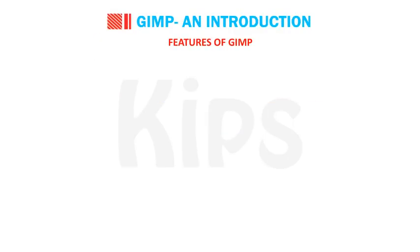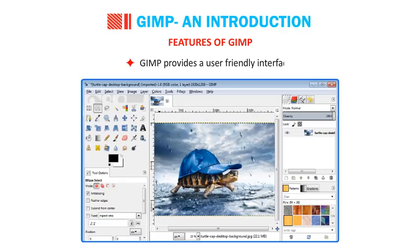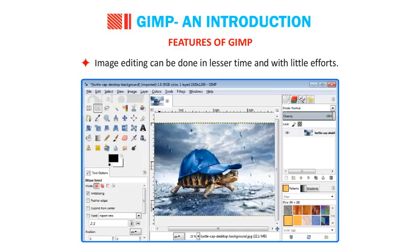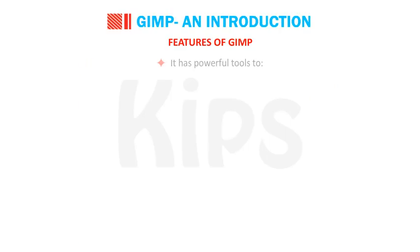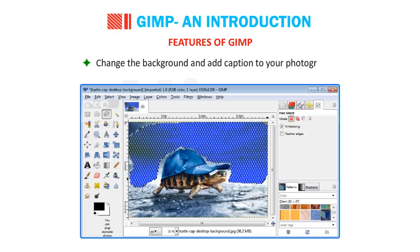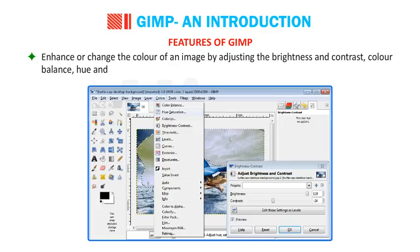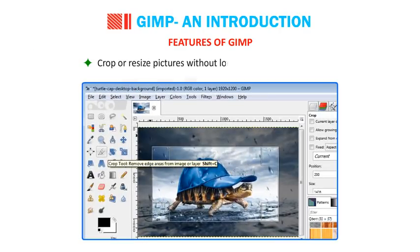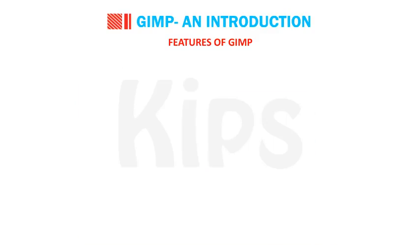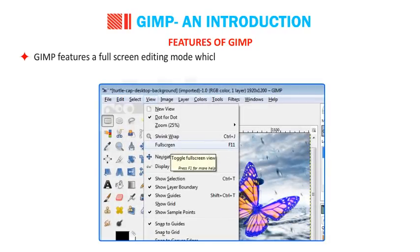GIMP provides a user-friendly interface. Image editing can be done in lesser time and with little effort. It has powerful tools to change the background and add captions to photographs. You can enhance or change the color of an image by adjusting brightness and contrast, color balance, hue and saturation levels, curves, etc. You can crop or resize pictures without losing the quality of an image, and merge two or more images. GIMP also features a full-screen editing mode which makes it possible to enhance all the elements of the image.